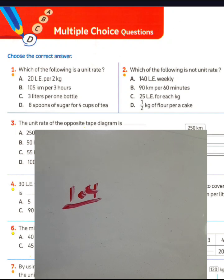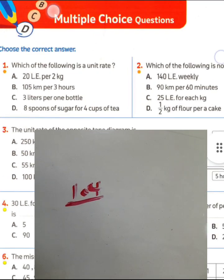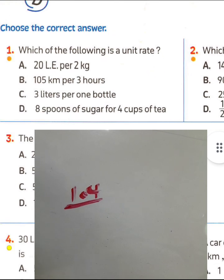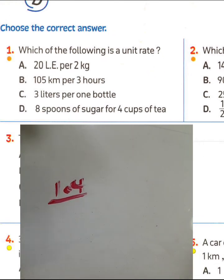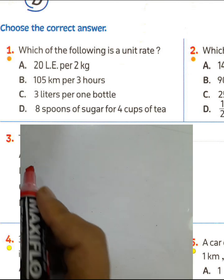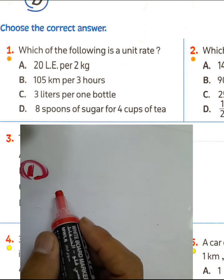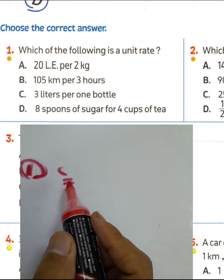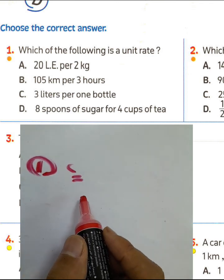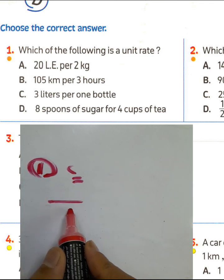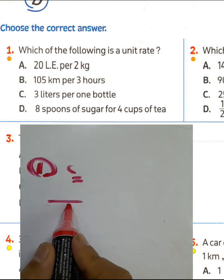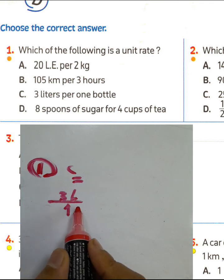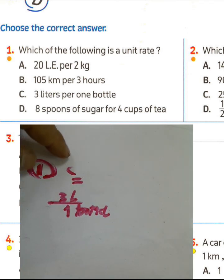Question 1: Which of the following is a unit rate? Unit rate means comparing between two quantities where the second term is one. You must choose letter C because letter C talks about three liters per one bottle — that is the unit rate, meaning the second term is one. Three liters, one bottle — choose letter C.